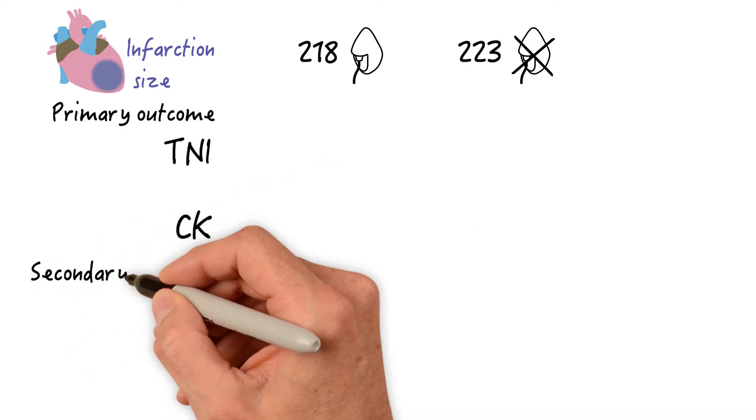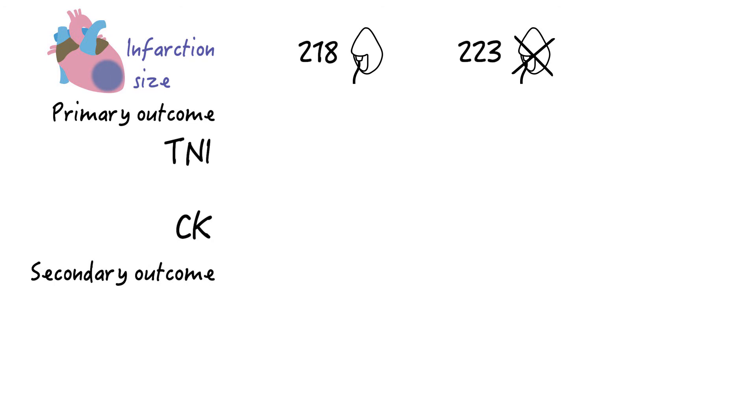The secondary outcomes were infarction size as measured by cardiac MRI six months after randomization and in-hospital re-infarction. And here are the results.